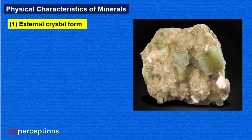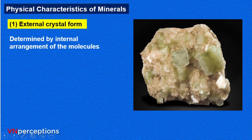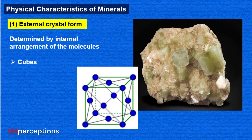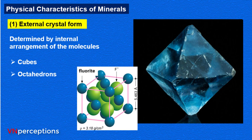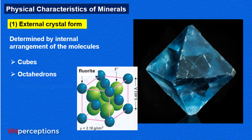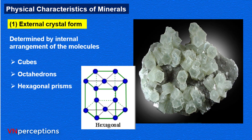Talking about the first physical property — external crystal form. The external crystal form of a mineral is determined by the internal arrangement of molecules. They can be in the form of cubes — for example, aluminium, nickel, silver, copper are examples of cubic phase. In case of octahedron, it is fluorite. When it comes to hexagonal prisms, it can be tin, zinc, magnesium, etc.